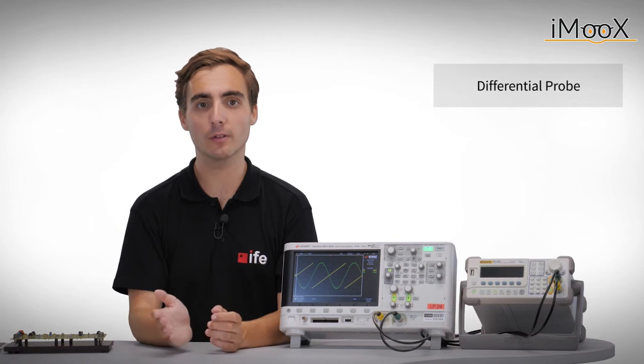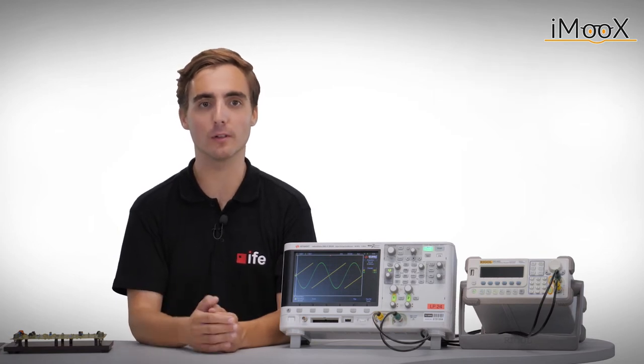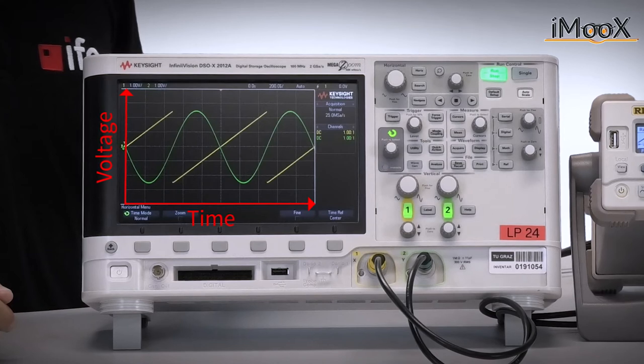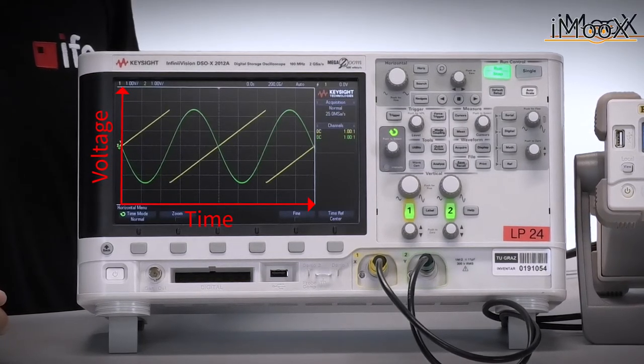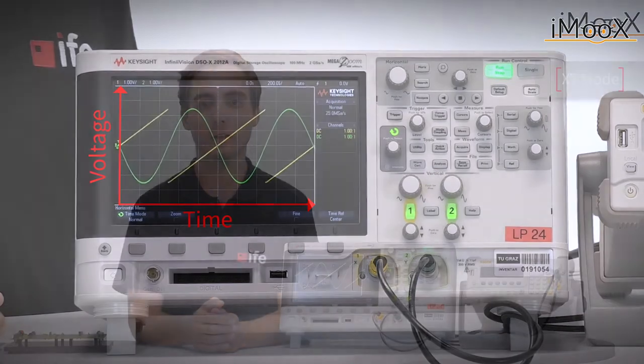In our previous video, we have already seen the usual plotting mode of a scope, which is voltage over time. However, there is a second option, which is called XY mode. In this mode, one signal is plotted with respect to the other signal.